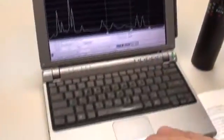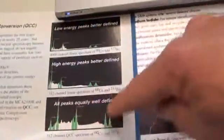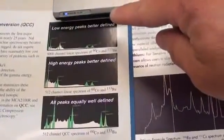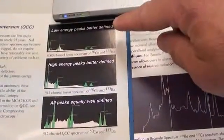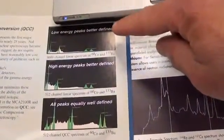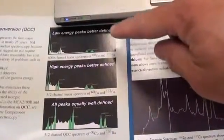I would like to show you one feature of Princeton Gamma Tech. We have a patented QCC algorithm which is quadratic compression conversion algorithm. It gives the industry's fastest and most accurate isotopic identification.